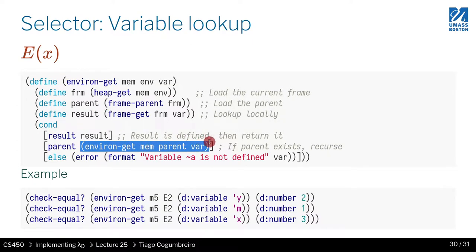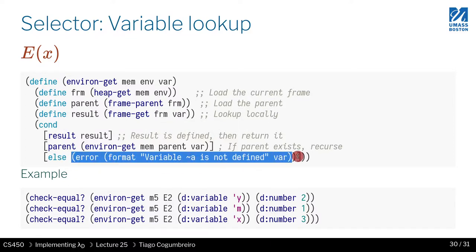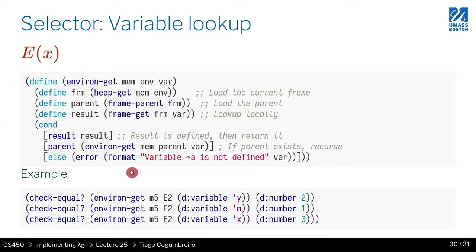You check if you've hit the root or not. If you have a parent, you recursively call, obtain the environment of the parent, and check if the parent contains that variable. Otherwise, you've reached the root and the variable is still not there, so you throw an error.